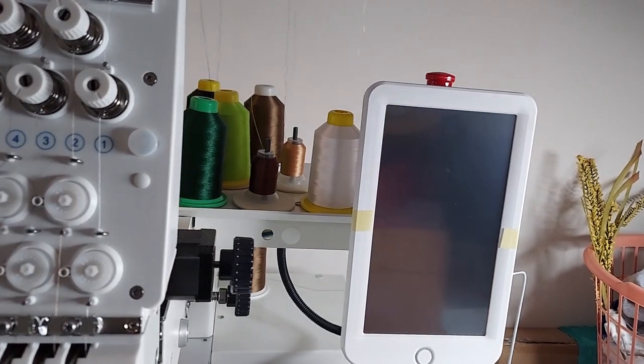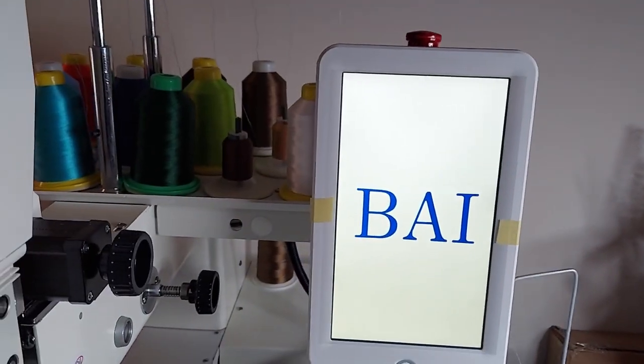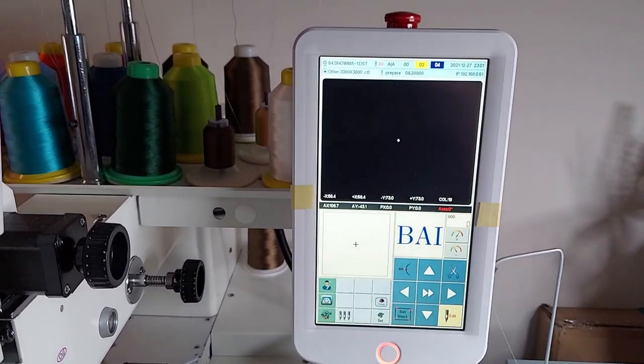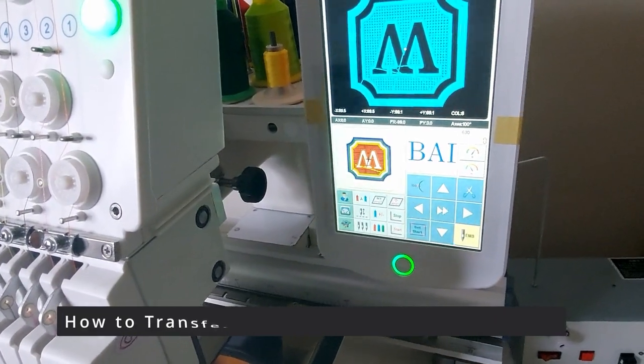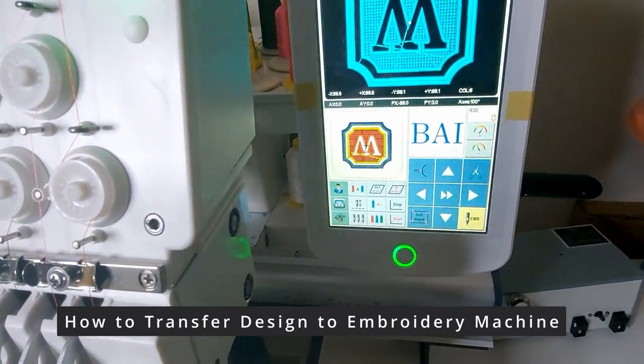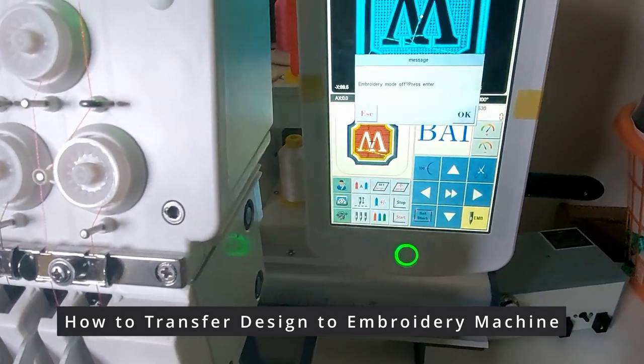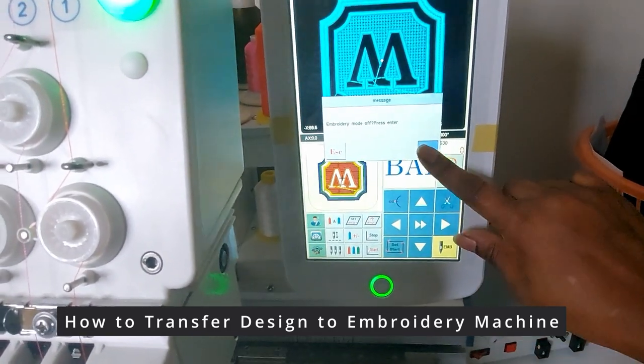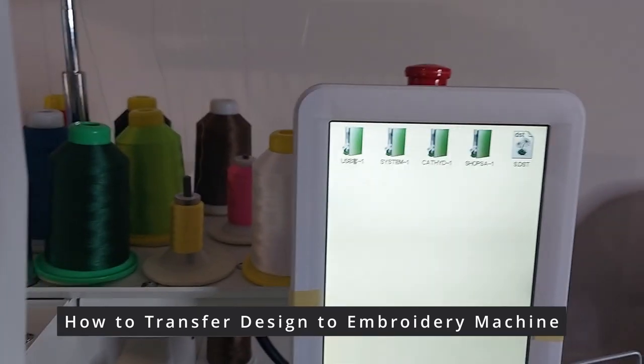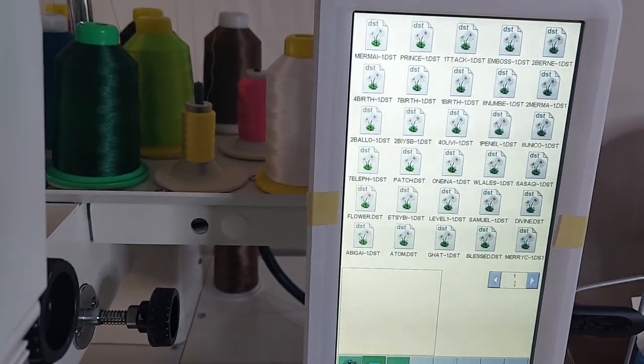To transfer your embroidery design to the machine, insert your flash drive. Remember to turn off the embroidery mode by pressing the EMB then OK. Then look for the flash drive icon on your machine and press it.